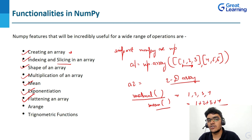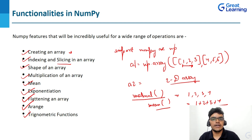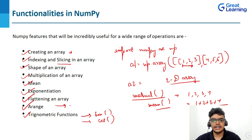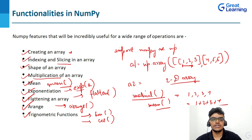Next, we have arange, which is used to create an array using NumPy. We can also use trigonometric functions using NumPy such as sine and cosine. All these NumPy features — sine, cosine, arange, flatten, exponentiation, mean, and matrix multiplication — are incredibly useful for a wide range of operations. In this way, we can use various functions of NumPy.